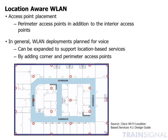Location-aware wireless LAN is typically deployed alongside voice and data applications. Voice requirements for received signal strength are more stringent than location requirements, so if you've already planned for voice, location planning can be supplemental. However, you don't want your access points clustered in the middle — to ensure a device can be heard by at least three access points, you need to deploy access points on the perimeters of the building.